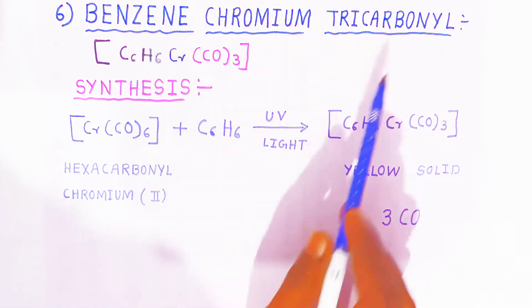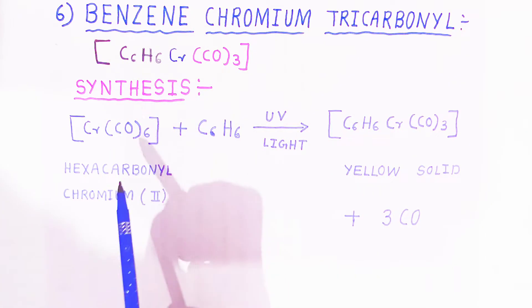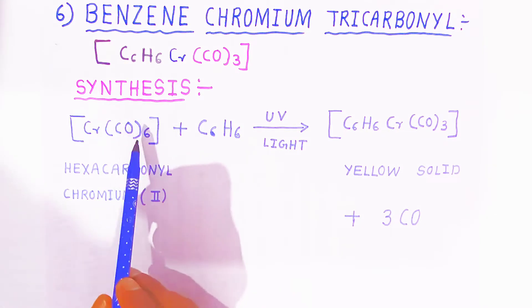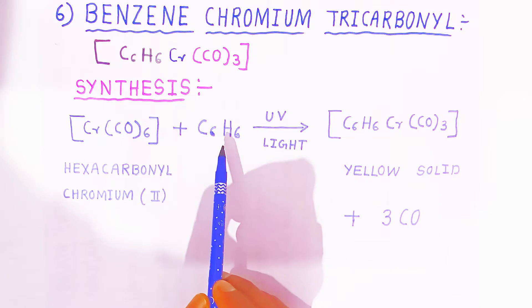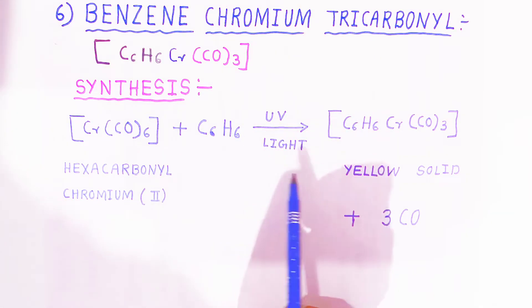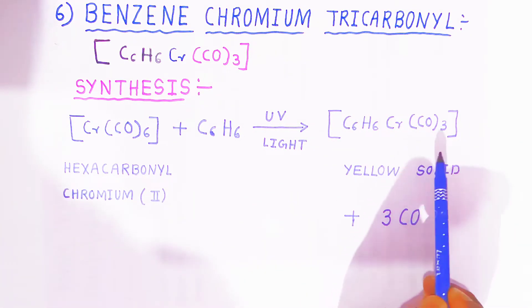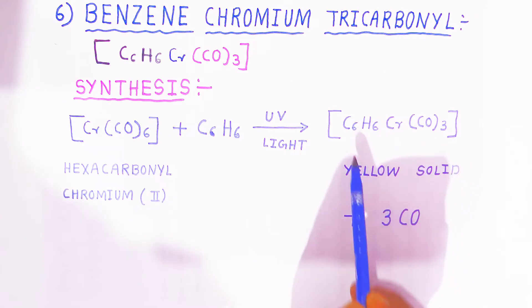How are you going to prepare benzene-chromium-tricarbonyl? The raw material is called hexacarbonyl-chromium. You require hexacarbonyl-chromium complex when reacted with benzene in presence of UV light. It will form the yellow solid of benzene-chromium complex, benzene-chromium-tricarbonyl complex, which is yellow solid in color, and you are getting three carbonyl groups.